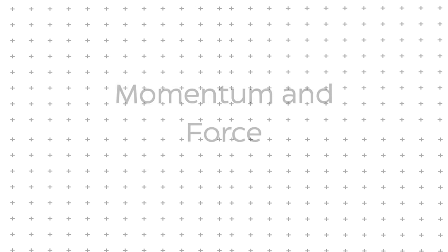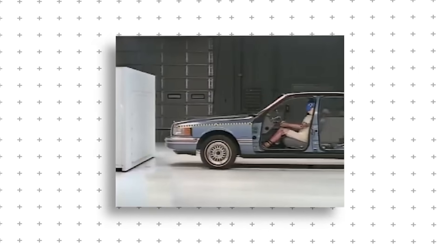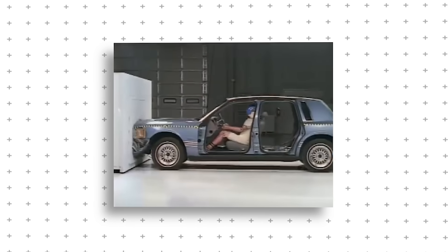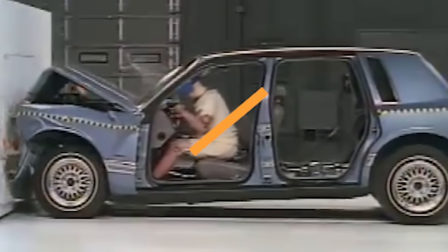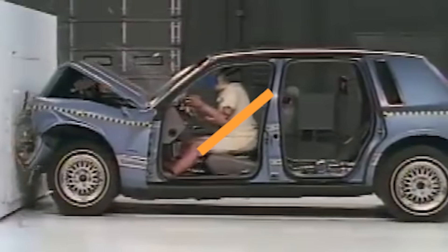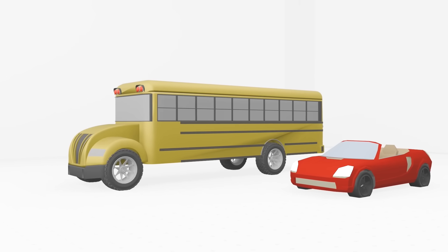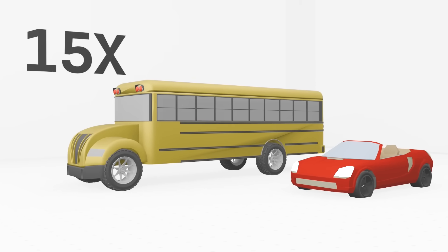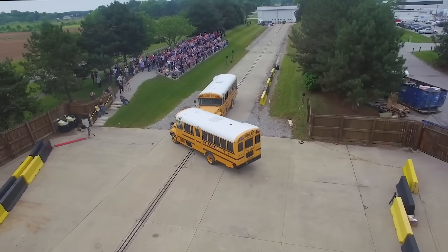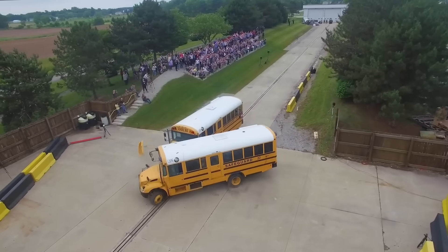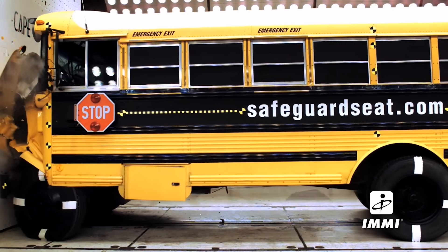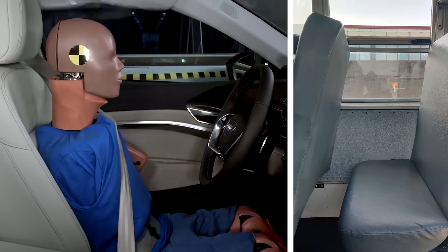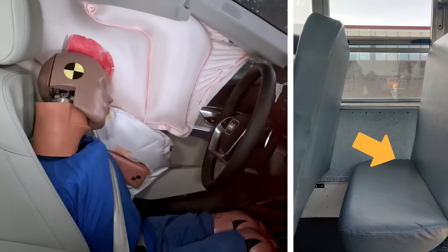The physics behind this design comes down to momentum and force distribution. In a car crash, the vehicle stops abruptly, and passengers continue moving forward unless restrained. That's why seatbelts are necessary. They counteract sudden momentum shifts that could send a person flying through the windshield. But school buses weigh up to 15 times more than a car. In a crash, that extra mass means a much more gradual deceleration. Instead of a violent stop, the force is spread out over time, reducing the impact on passengers. This is why school buses don't rely on seatbelts the way smaller vehicles do.